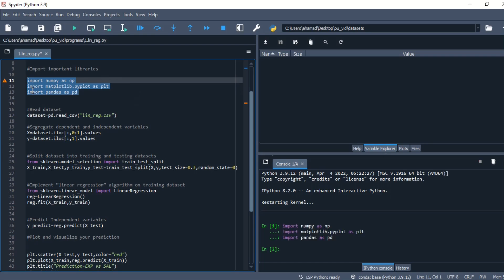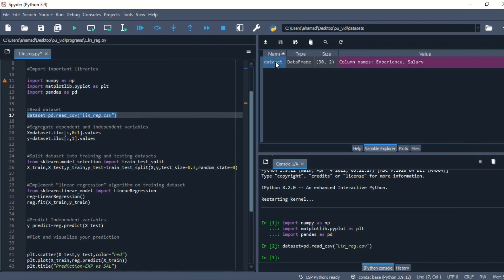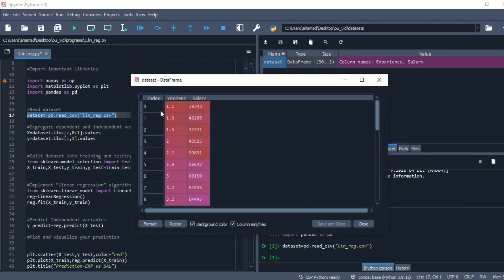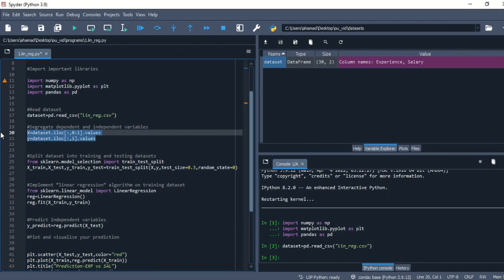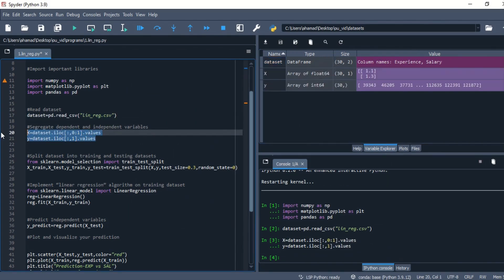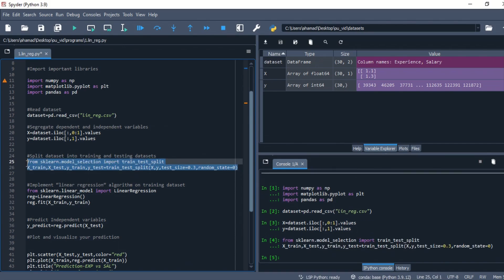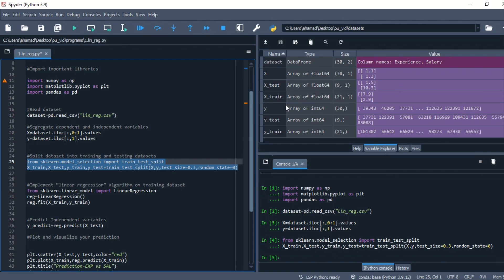Firstly, I am inputting all the important libraries and then I am reading the dataset. The dataset has been created successfully. See, the dataset consists of the experience column and salary column. Now I am segregating the dependent and independent variables. After that, I am going to split my dataset into training and testing dataset. It has been successfully executed.